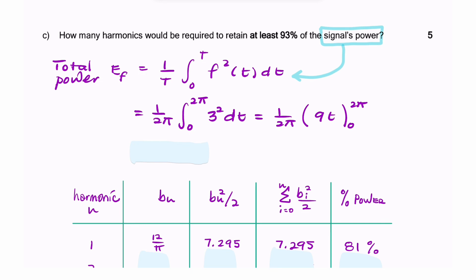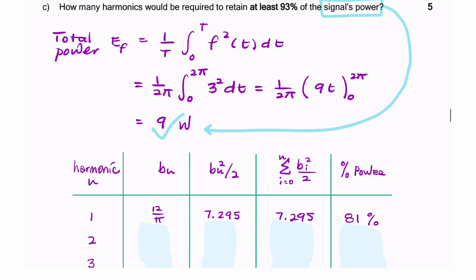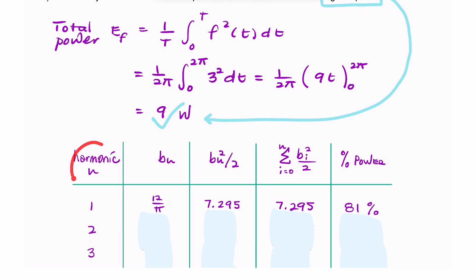Now, f(t) is either 3 or negative 3, and if you square it, you're always going to get 9. So we don't need to split this into two integrations. It's easier just to say it's the integration of 3 squared, and I replace 2T with 2π. If you integrate that, you get 9t, and if you replace the limits, you end up with 9. So that is the signal power, 9 watts. The question is asking, how many harmonics do you need to retain 93% of that?